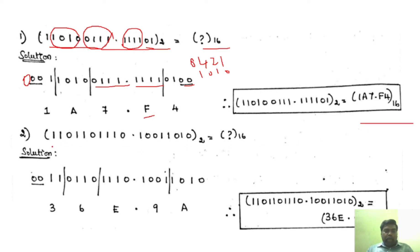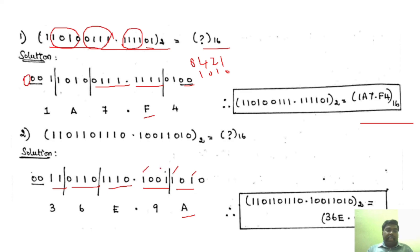For the second hexadecimal example, we again group into 4 bits from LSB for the integer part, adding extra zeros, and group the fractional part in 4 bits from MSB. Using 8-4-2-1 code: 1 0 1 0 is 10 represented as A, 1 0 0 1 is 9, 1 1 1 0 is 14 represented as E, 0 1 1 0 is 6, and 0 0 1 1 is 3.